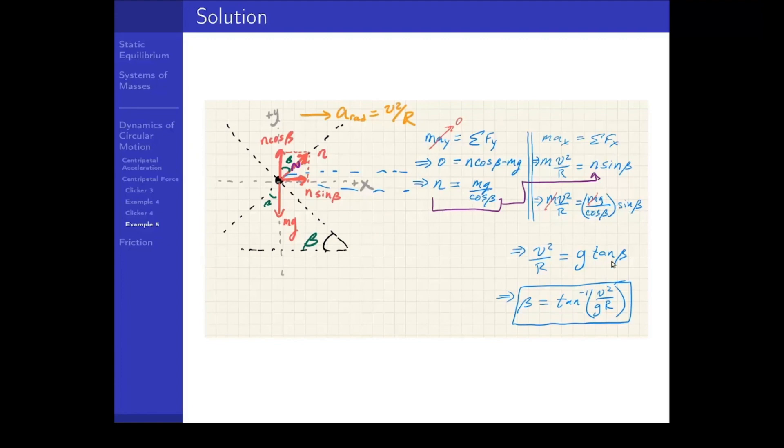So we can finally conclude that the angle that you should bank the curve at, so that you can undergo circular motion at a certain speed, even without friction, is the inverse tangent of the speed squared divided by g r. We can see that the mass of the car is irrelevant for the banking curve. And we also see that there are some conclusions we can make about how much we should bank the curve based on the situation. The faster you go, the greater the angle you should use so that you don't slide upward.